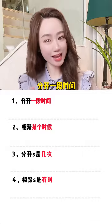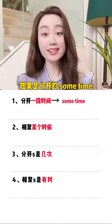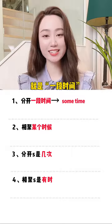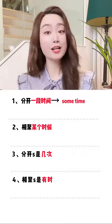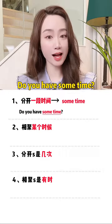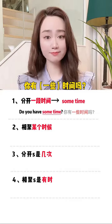分开一段时间——如果是分开的 some time（两个词），就是一段时间。比如说：Do you have some time? 你有一些时间吗？